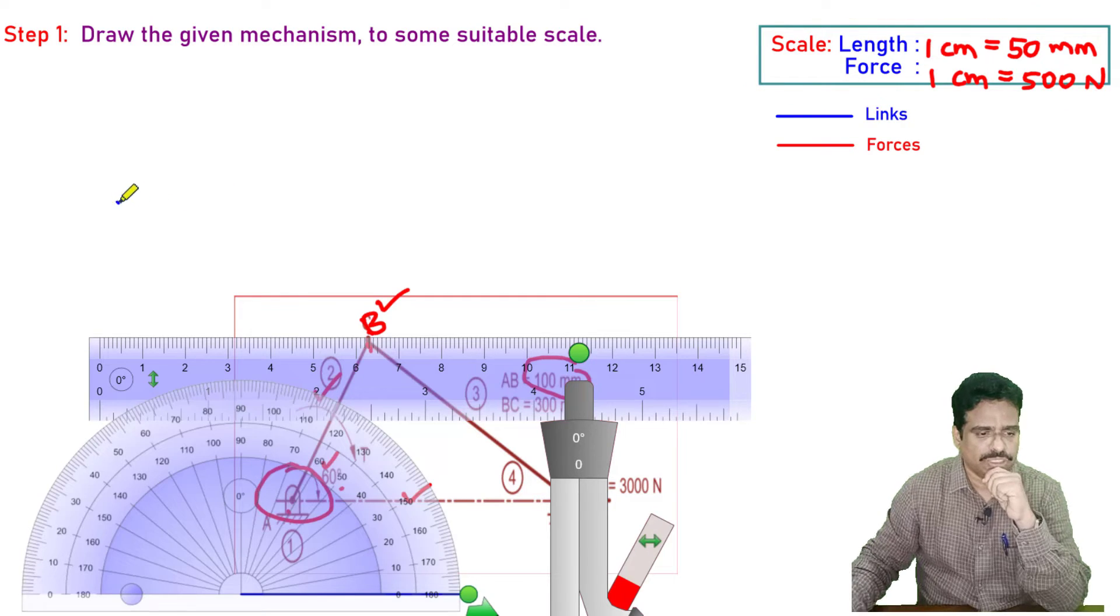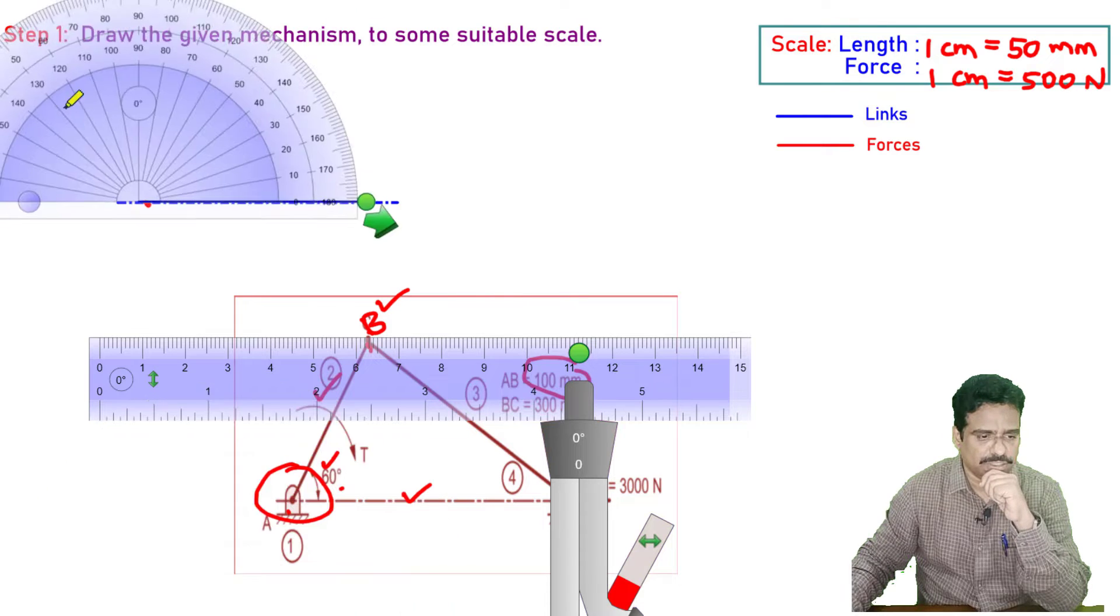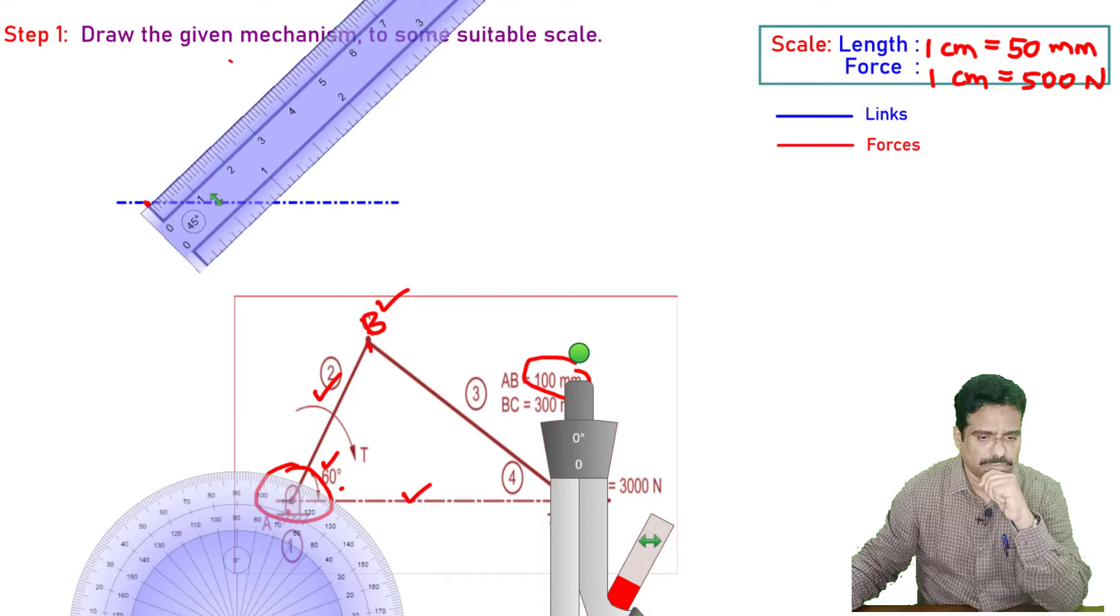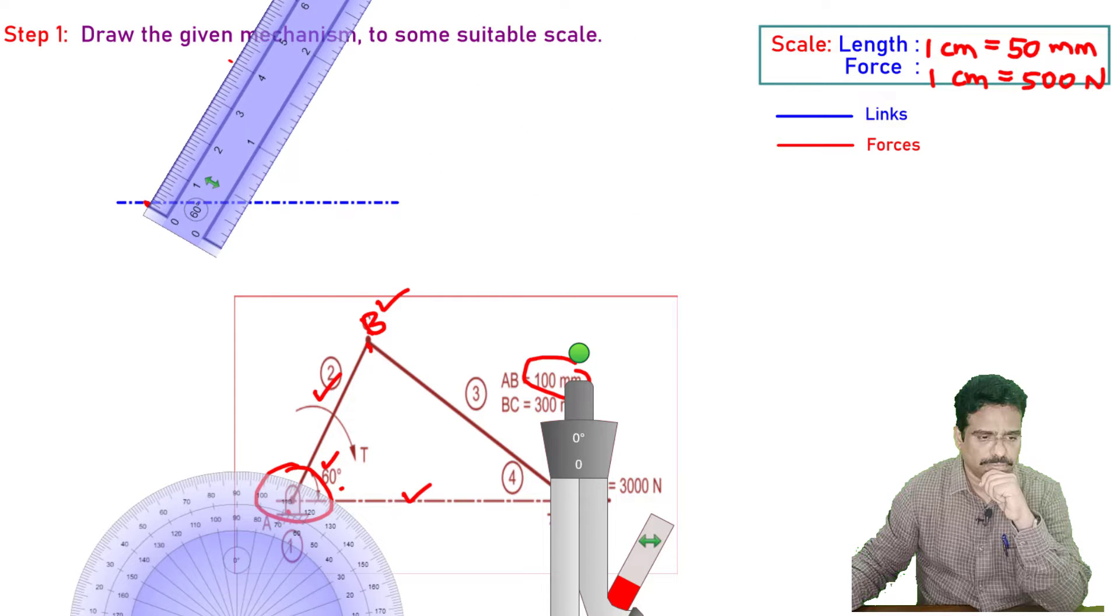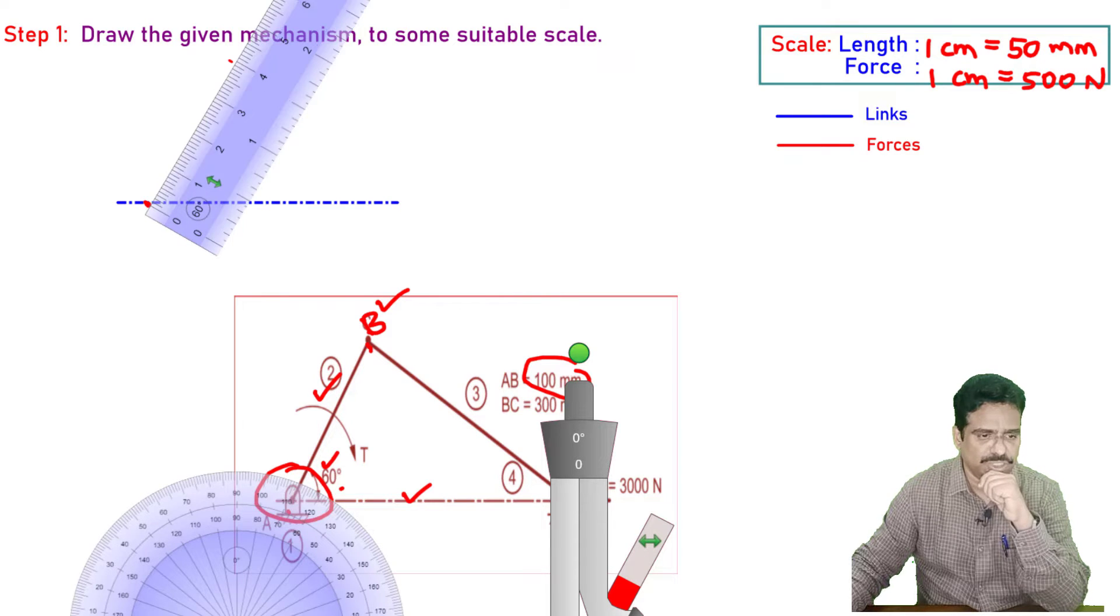Let me draw the axis line. Arbitrarily, let me start somewhere here. Angle is 60 degrees given. I have taken the scale, the length is 100 mm. So as per my scale, I should be drawing a 2 centimeter line.